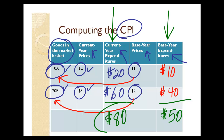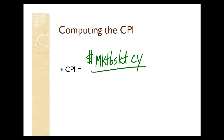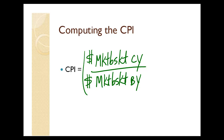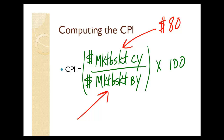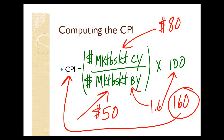Now we use those two amounts — $80 and $50 — to compute the CPI. The formula is: CPI = (dollars spent on the market basket in the current year) divided by (dollars spent on the market basket in the base year), multiplied by 100. So $80 divided by $50 gives us 1.6, and 1.6 times 100 gives us a CPI of 160 for the current year.